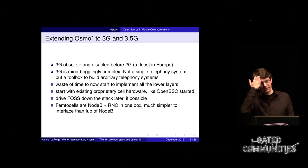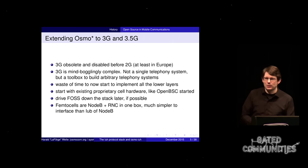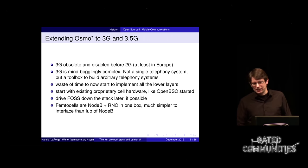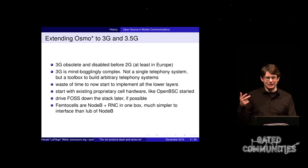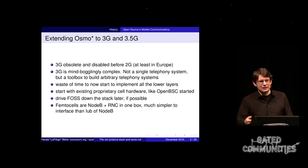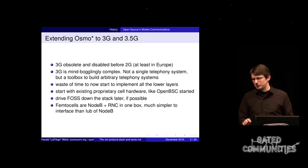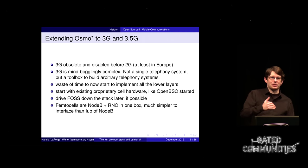Another reason not to look at 3G is that it's mind-bogglingly complex — it's not a single telephony system but a toolbox to build arbitrary telephony systems. If you really wanted to implement it from scratch including all the lower layers, the PHY, layer 2 and so on, it would be a waste of a lot of time. So we do what we did with GSM: use proprietary base station hardware and implement the higher-level protocols, then if needed drive open source further down the stack.